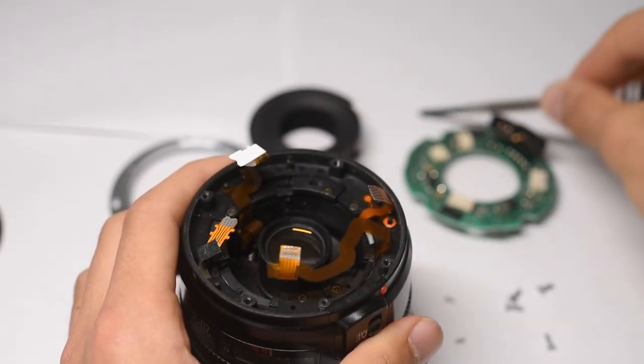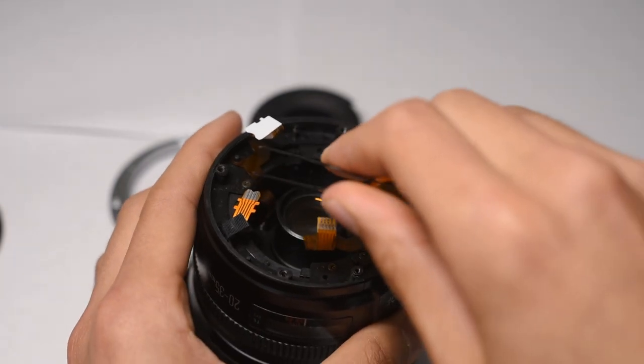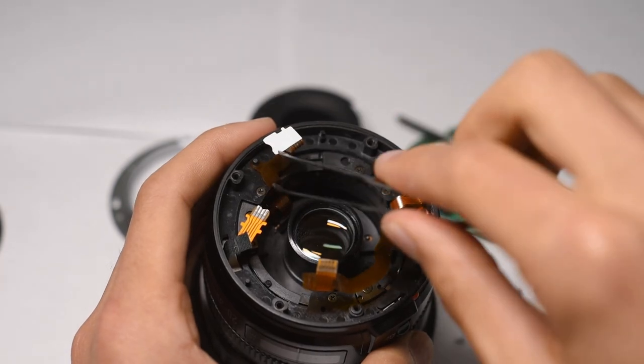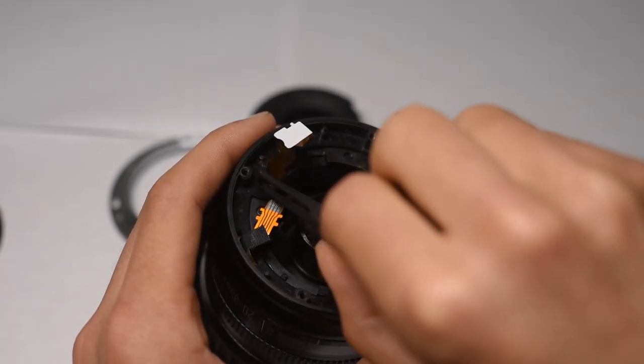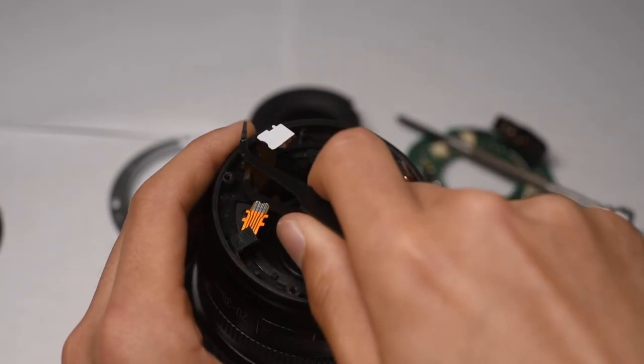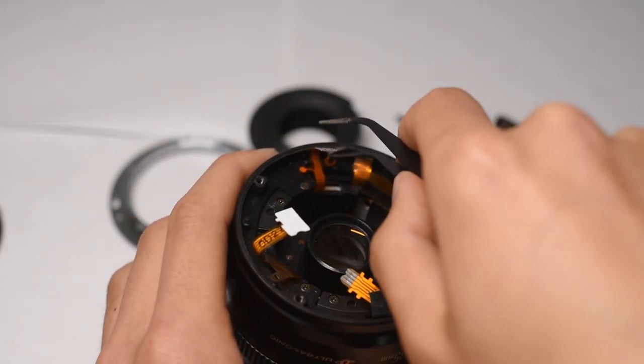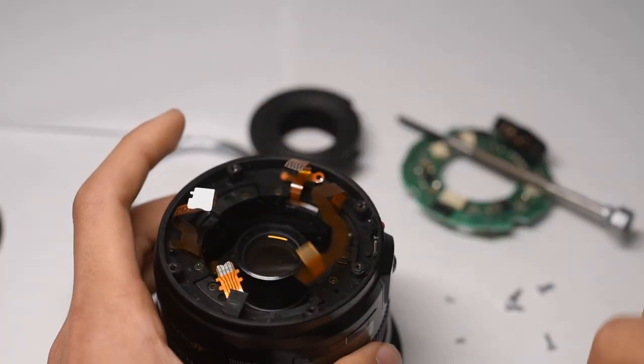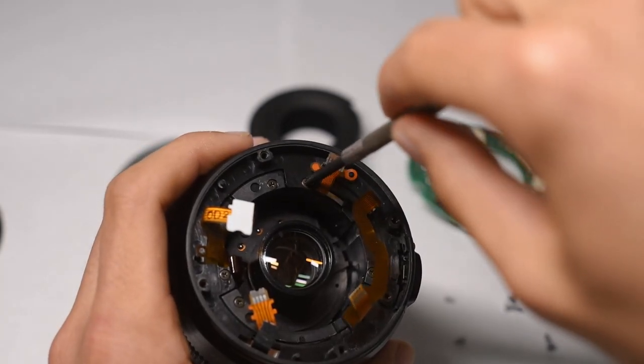But before you do that, the wires are connected to a small pin, black pin here. See that there? You want to take that out. Otherwise you're going to rip the wires. And that one too. There are only two wires that do that. And just unscrew.